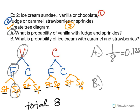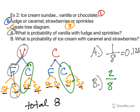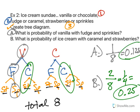Now let's go to B. What is the probability of ice cream with caramel and strawberries? Well, if you think about it, here we have caramel and strawberries, and here we have caramel and strawberries. So there are two of those out of the eight total options. That reduces to one fourth or 0.25. So that is how you can use the tree diagram to find probability.